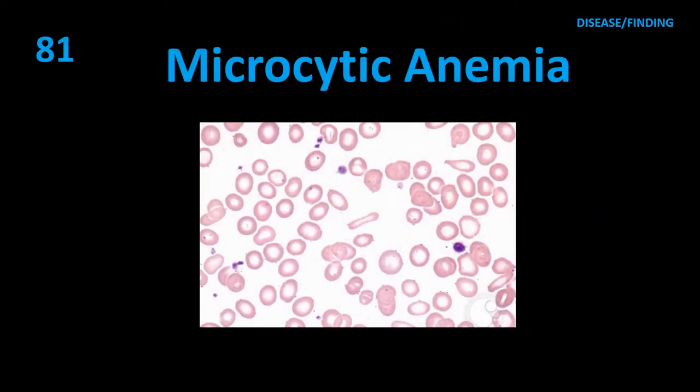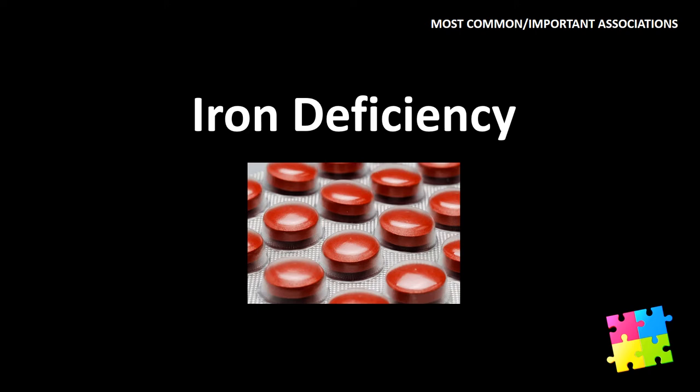Item 81: Microcytic anemia — iron deficiency.